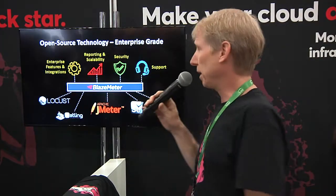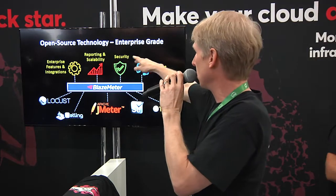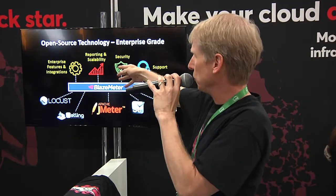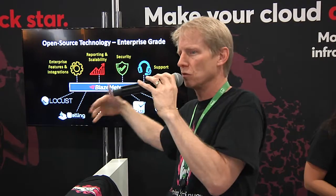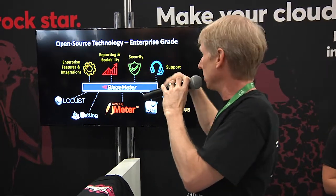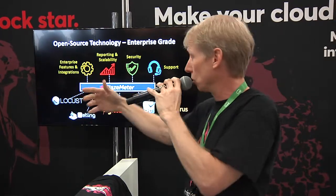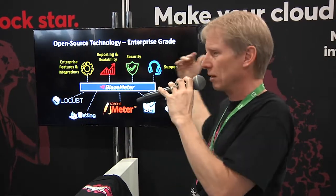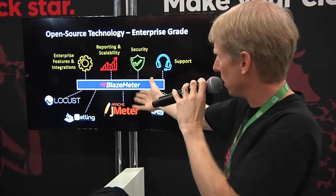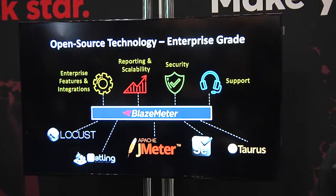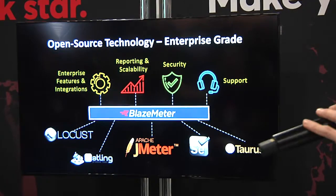This is the gap that BlazeMeter fills. What BlazeMeter is basically doing is taking open source technology and making it enterprise-grade — enterprise features and integrations with APM tools for monitoring, for getting back-end data, reporting and scalability, the ability to share with colleagues in a secure way, security, support, having somebody you can call. And it's not just JMeter — we actually provide support for Locust, Gatling, JMeter, Selenium, and our own tool, Taurus, and other open source tools as well.